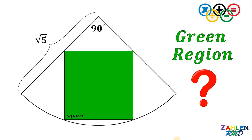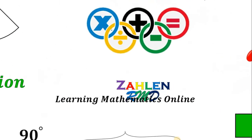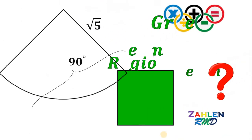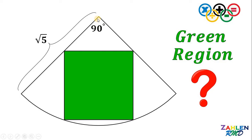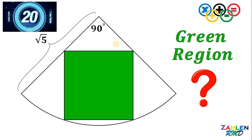Good day everyone, here's our math challenge for today. Given this quarter circle with a square inside it, the length of the radius of this quarter circle is square root of 5. The question is: what is the area of the square? If you want to try this problem, just pause this video. We have 20 seconds — timer starts now.